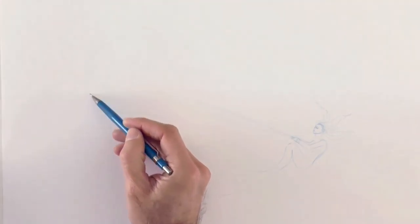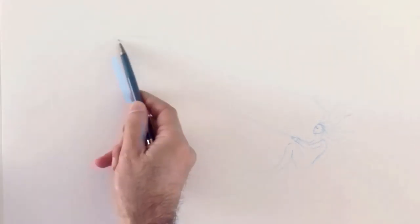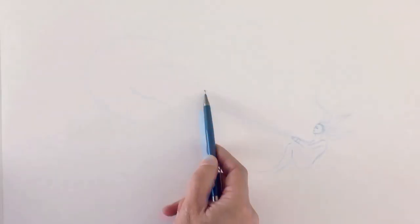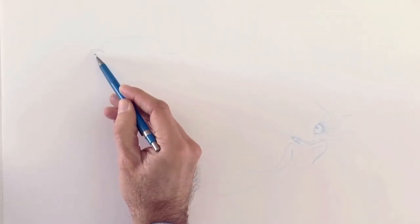Now we sketch the general shape of the fish beginning with the fins. The large ones on top and on the bottom and then the face.